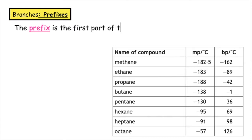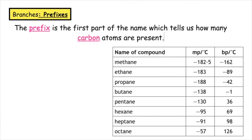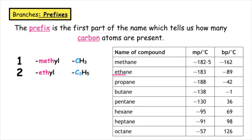The prefix is the first part of the name which tells us how many carbon atoms are present. When naming branches, the same rule applies - we can use page 9 of our data booklet. If the prefix is meth, we have one carbon atom; the branch is known as methyl, written as CH3. Eth gives two carbons, known as an ethyl branch written as C2H5. Prop gives three carbons, known as a propyl branch written as C3H7.